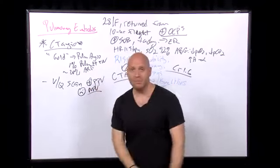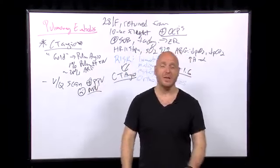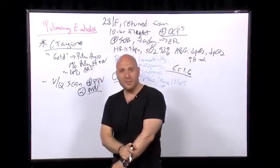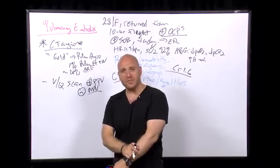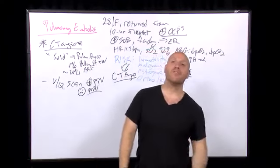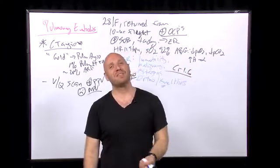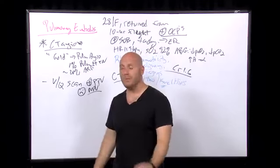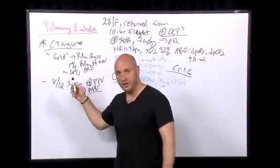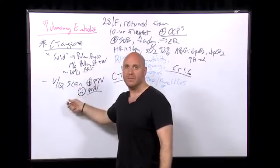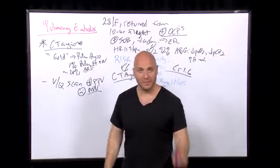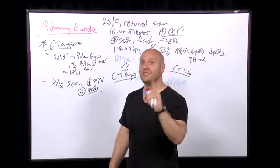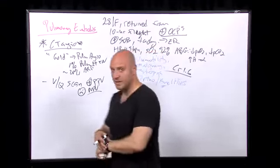And the bigger issue with the VQ scans is they very often come back intermediate. The radiologist can't put a stamp on it, right? They very often come back intermediate. That's why VQ scans are a problem. If you cannot use a CT angiogram, then you could use this. But they're not entirely accurate. There's ways that you could improve its specificity and sensitivity. Let's take a look.